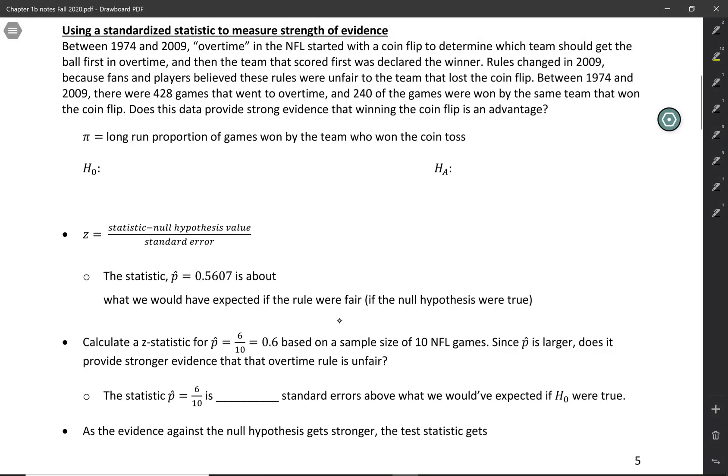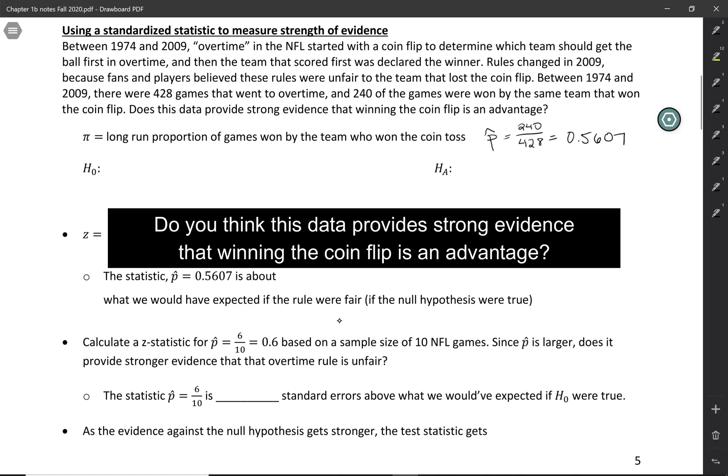Let's formally carry out the test. The parameter is going to be the long-run proportion of games won by the team who won the coin toss—what would happen if the NFL played with this rule forever. The sample proportion p-hat is 240 out of 428, which is 0.5607. What's your intuition? Do you think this provides strong evidence that winning the coin flip is an advantage?